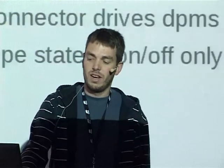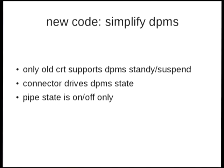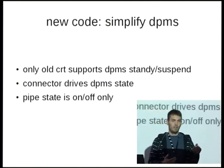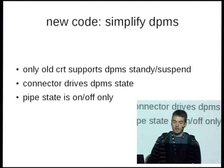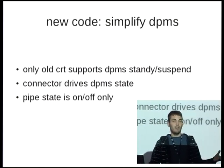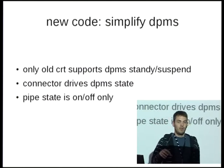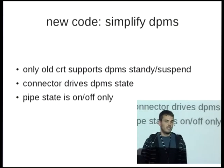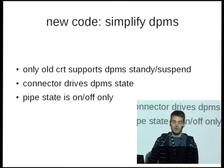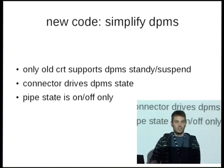The first thing that prepared for the rewrite was to simplify the DPMS code, because essentially all Intel hardware only supports on and off. All the intermediate standby and suspend states are overkill — the only place we support that is for old VGA outputs on old hardware, and new hardware doesn't even support that on VGA. So we had some stupid decisions in our code where we only turned off the pipe when the DPMS state was 'off', wasting power for everyone with modern outputs. The fix was to move DPMS state control into the connector.